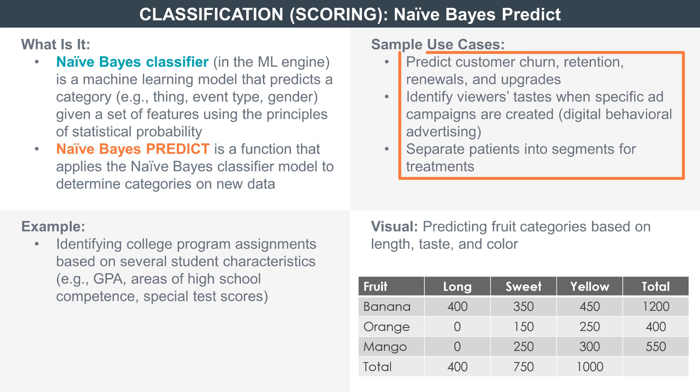Use cases for Naive Bayes PREDICT include customer churn, retention, renewals, and upgrades. It can also be used to identify a viewer's taste when specific ad campaigns are created.